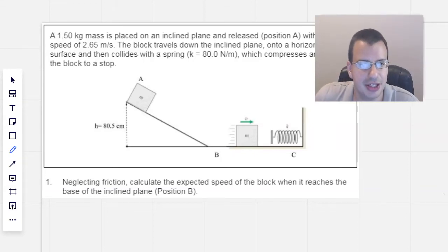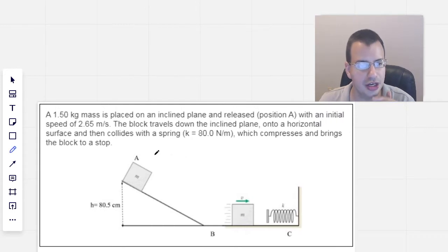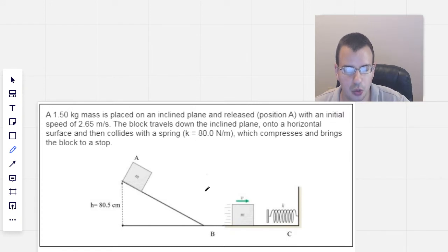A 1.5 kg mass is placed on an incline plane and released from position A with an initial speed of 2.65 m per second. The block travels down the incline plane onto a horizontal surface and then collides with a spring with a k constant of 80 N/m, which compresses the spring and brings it to a stop.